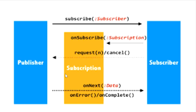The publisher then sends data streams to the subscriber by invoking the onNext method. For example, if the publisher sends 100 records, it will call onNext 100 times. Once all 100 records are received by the subscriber, the publisher invokes onComplete. But if any error occurs while sending those records, onError will execute and onComplete will not. If everything executes successfully and is received by the subscriber, then onComplete will execute.